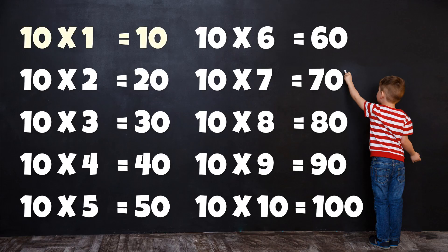Table of 10: 10×1=10, 10×2=20, 10×3=30, 10×4=40, 10×5=50, 10×6=60, 10×7=70, 10×8=80, 10×9=90, 10×10=100.